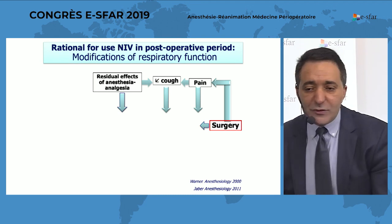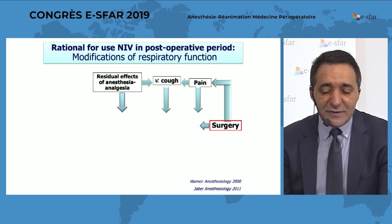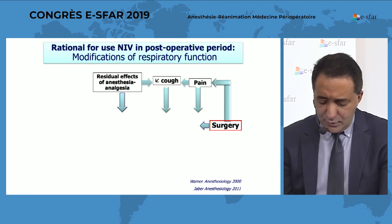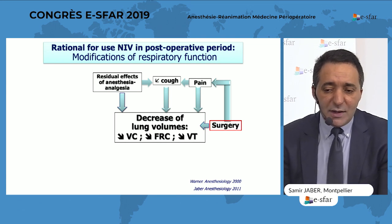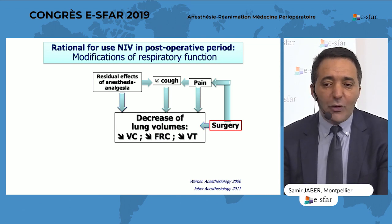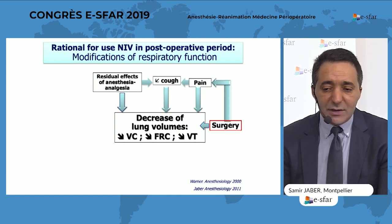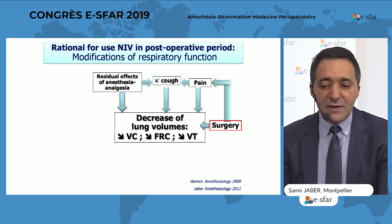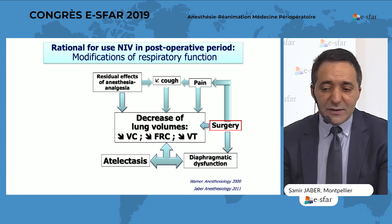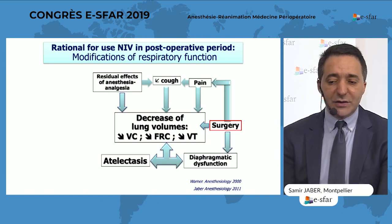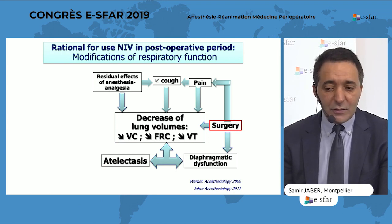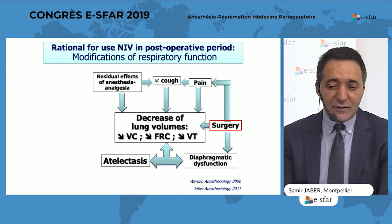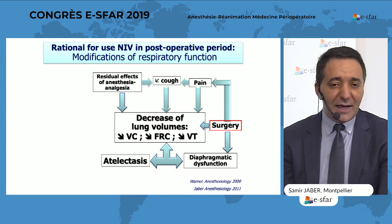You have the residual effect of anesthesia, analgesia, drugs, the decrease of cough, the pain, and the surgery aggression — all of this induces a restrictive syndrome affecting all volumes including the tidal volume, the FRC, and all other volumes. This is associated with diaphragm dysfunction, atelectasis, and a vicious circle develops with restrictive volume syndrome, diaphragm dysfunction, and atelectasis.